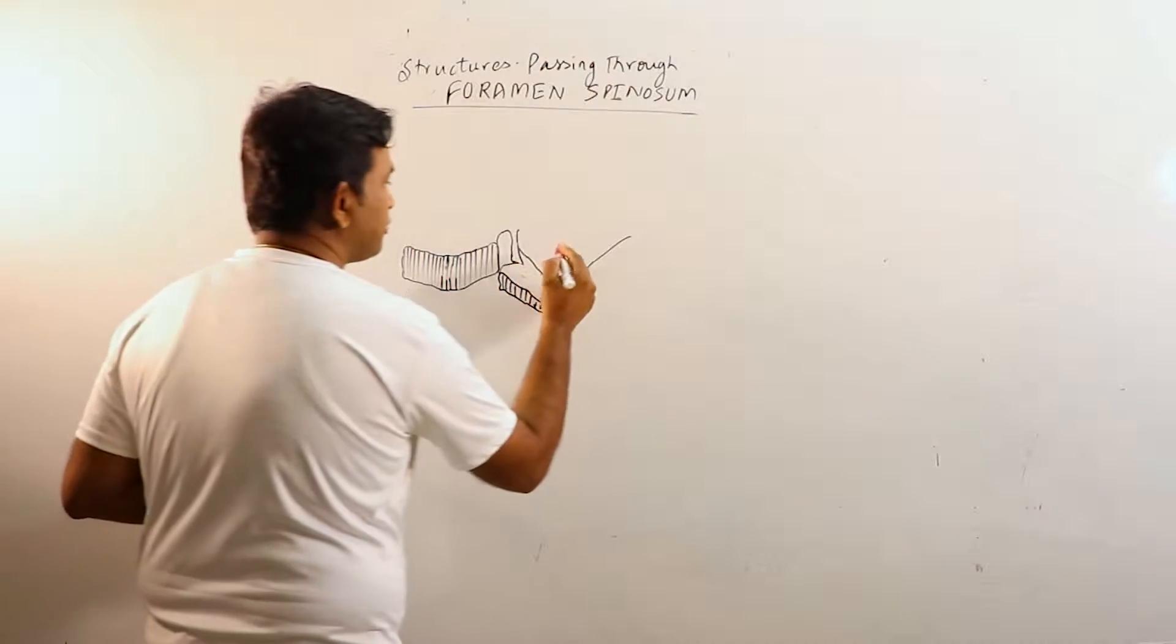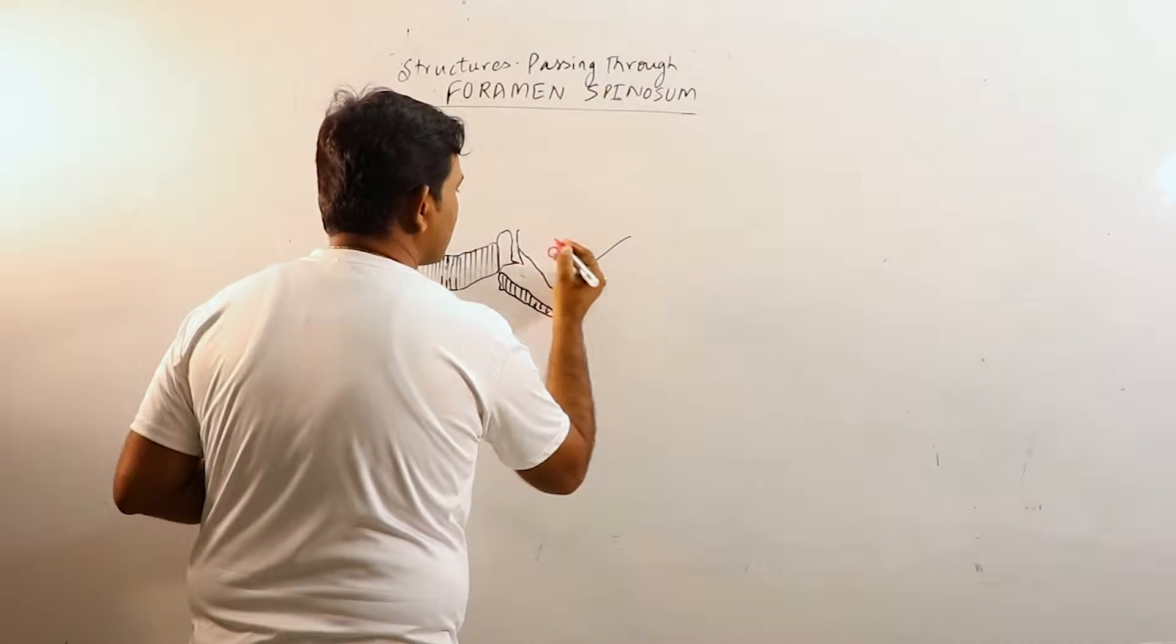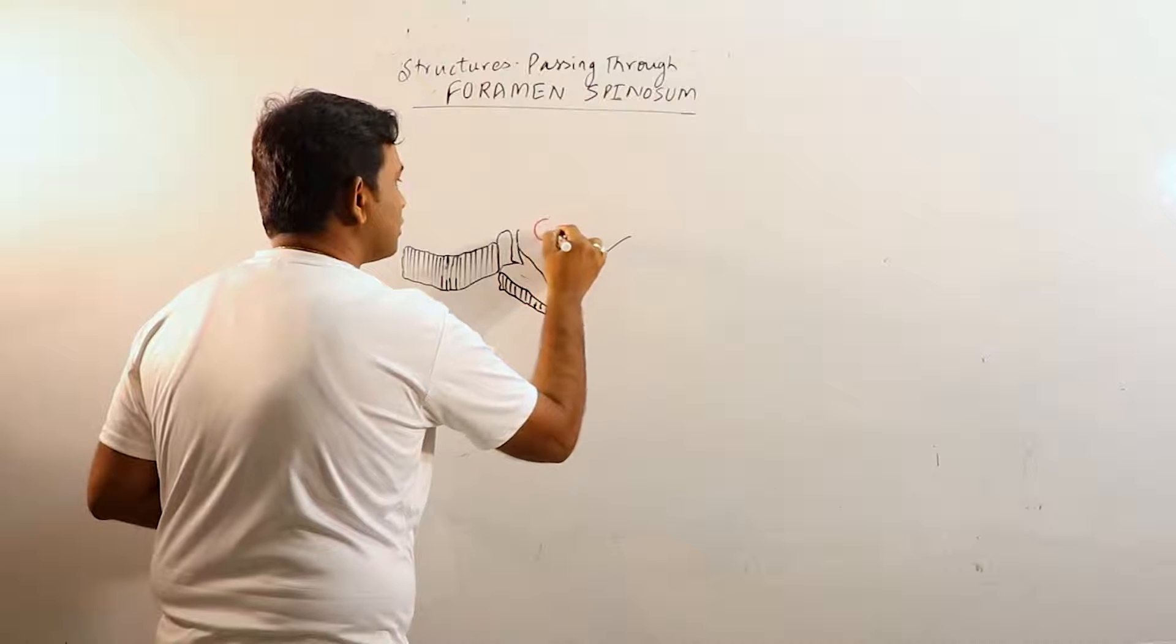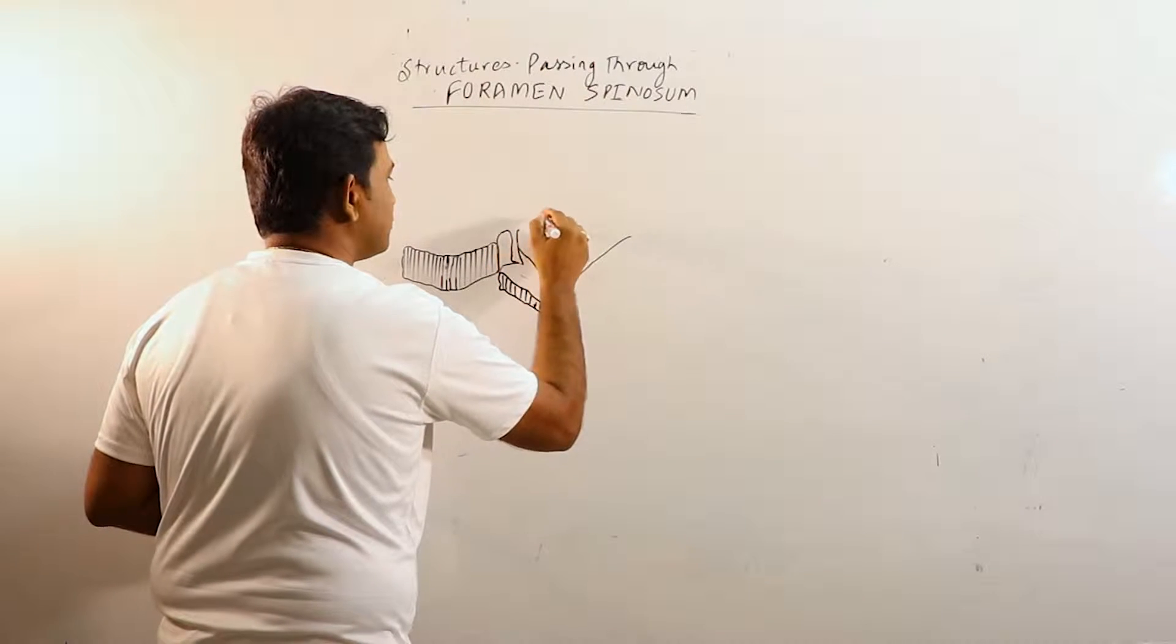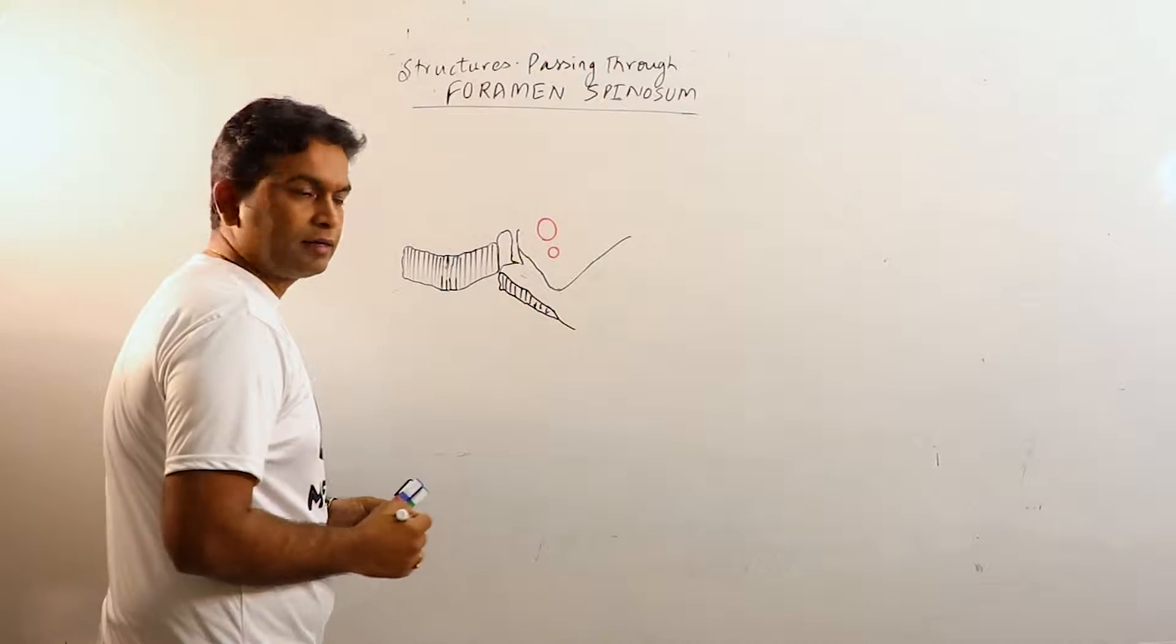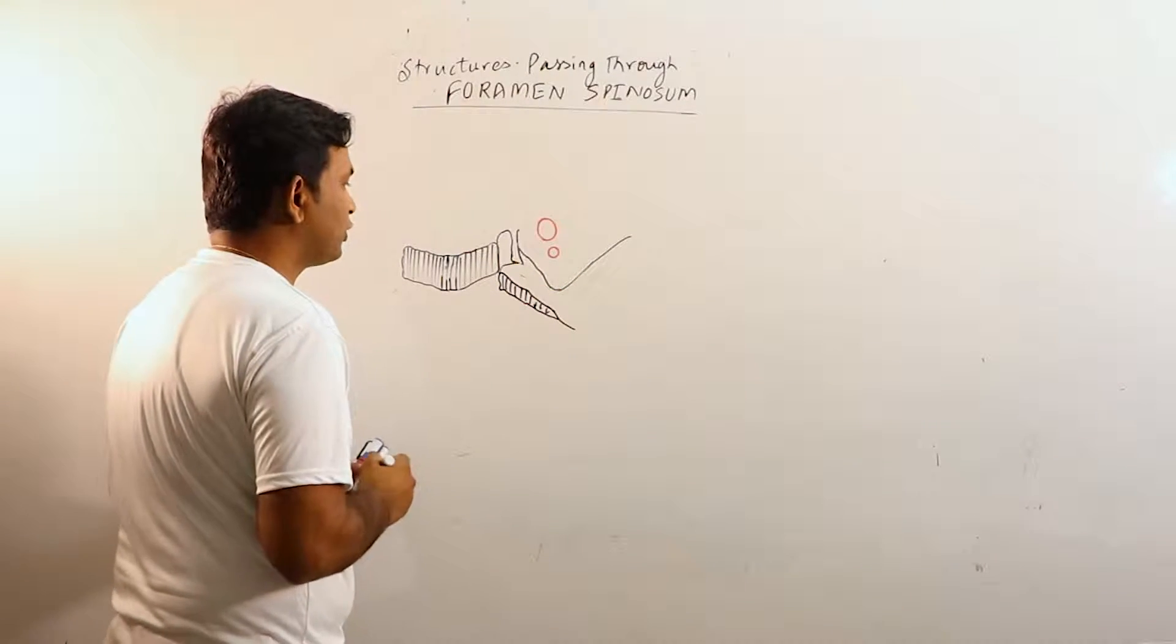So this is foramen spinosum. It is located just posterior to the foramen ovale and anterior to the spine of the sphenoid bone.